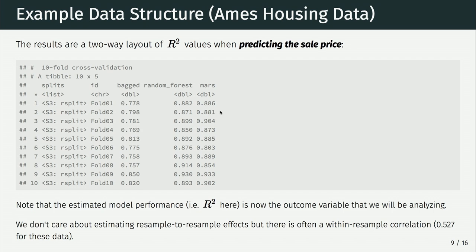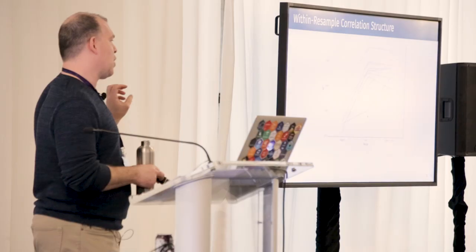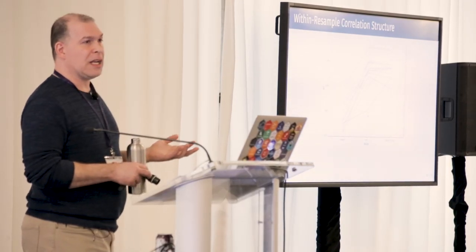If somebody brought you an ANOVA model, it would look like this. The things we want to analyze now are not the original sale price data — it's the actual R-squareds. So now we're going to analyze the summary statistics of our models as if they were our original data. The complication is there's usually a resample-to-resample effect: you might have one resample that all the models have trouble with, so uniformly low performance, and another that was really easy. The within-resample correlation is 0.52, which is pretty far from zero.